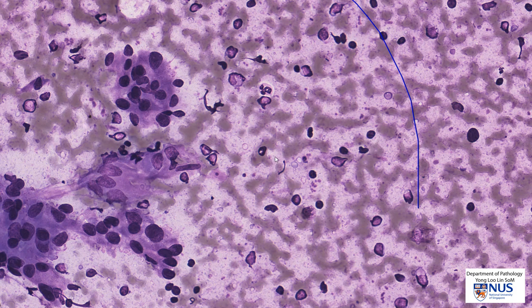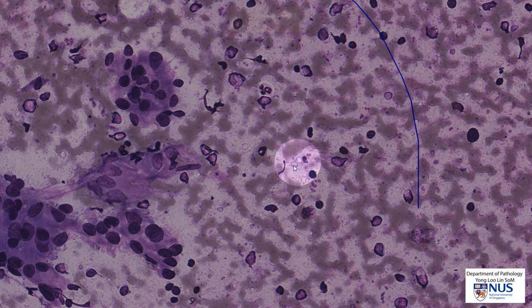In the background, we have quite a few dispersed cells. These cells have slightly irregular nuclei with a little rim of cytoplasm, and they are lymphocytes. Not only do we see lymphocytes, we also see occasional lymphoglandular bodies.